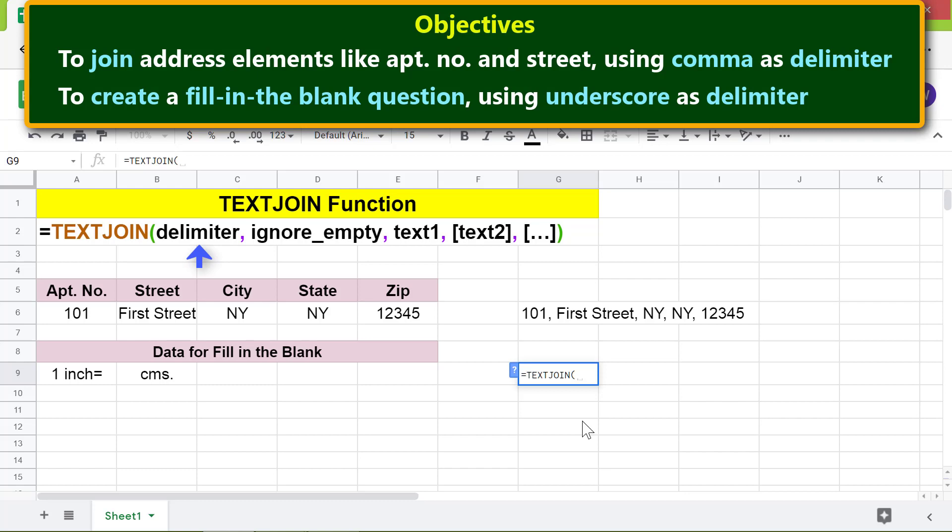For ignore empty, type true, then type comma. For text one, click this cell, then type comma. For text two, click this cell and press enter.